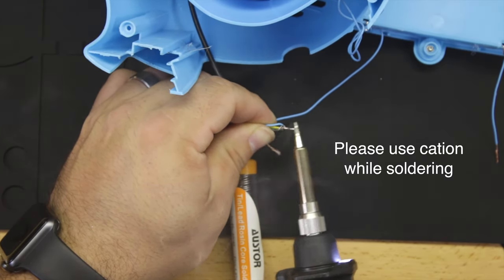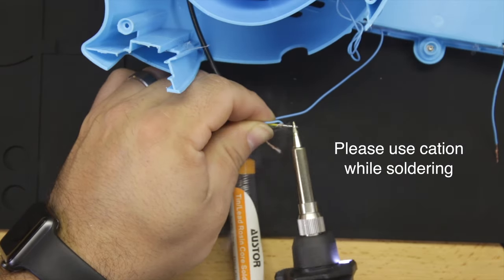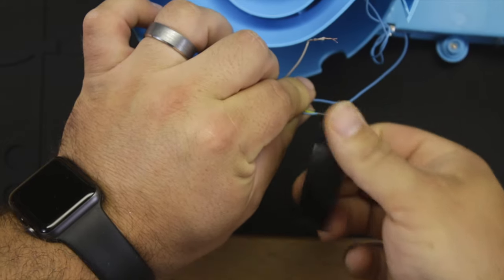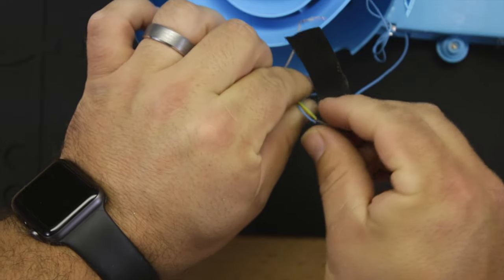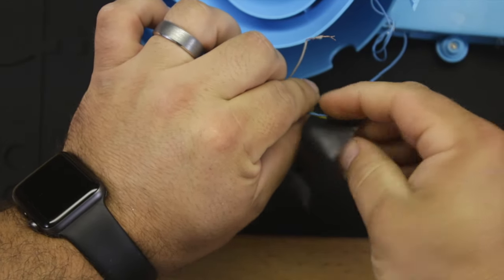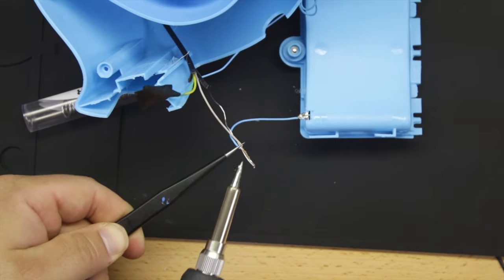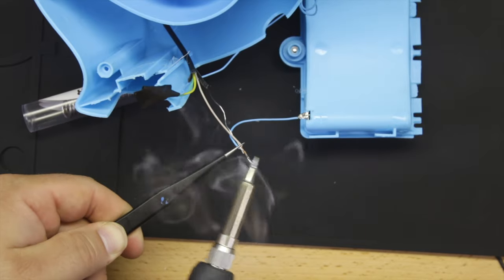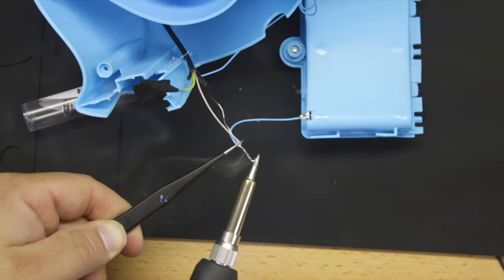Go ahead and solder the yellow and green wires together to one of the wires from the button, and you'll want to use a little bit of electrical tape to keep the wires from touching. And secure the white wire to the other wire from the original button.